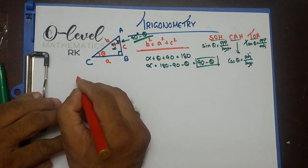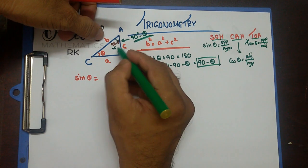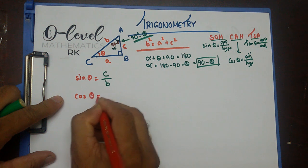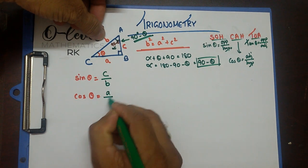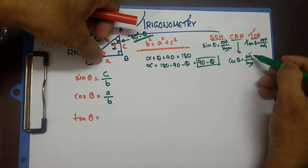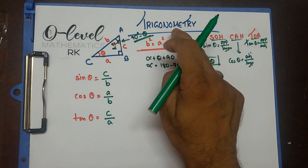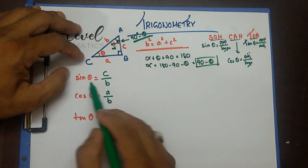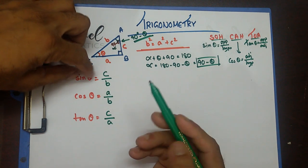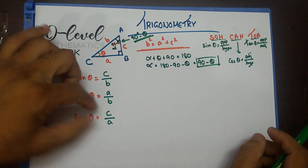Let me write these down. Sine theta equals opposite over hypotenuse, which is C over B. Cosine theta equals adjacent over hypotenuse, which is A over B. Tan theta equals opposite over adjacent, which is C over A. Trigonometry is the study of the relationship between angles and sides of a triangle — sine, cosine, and tangent each represent a ratio of two sides.